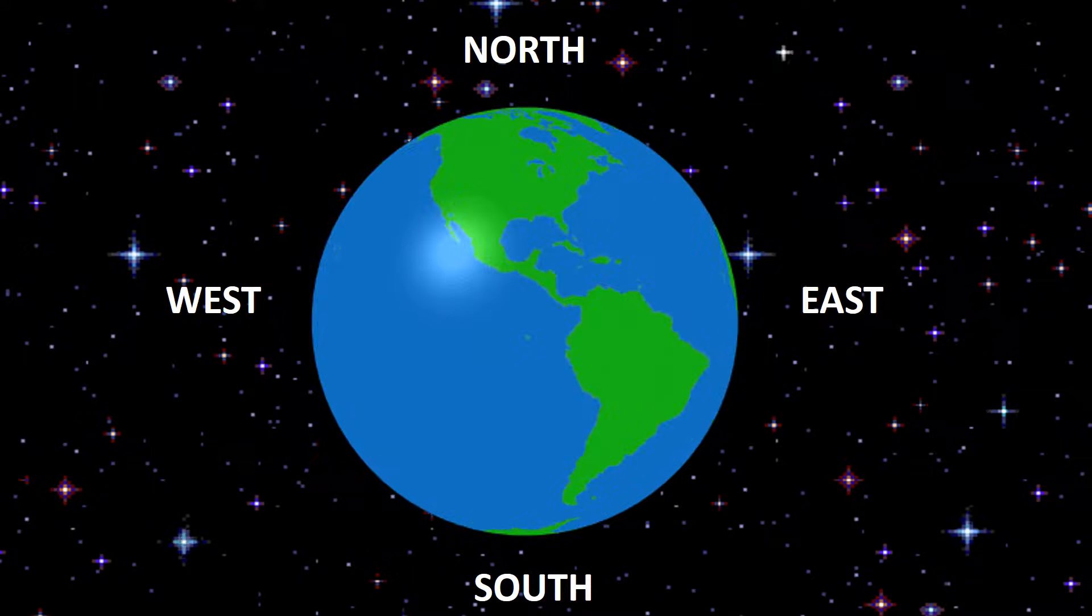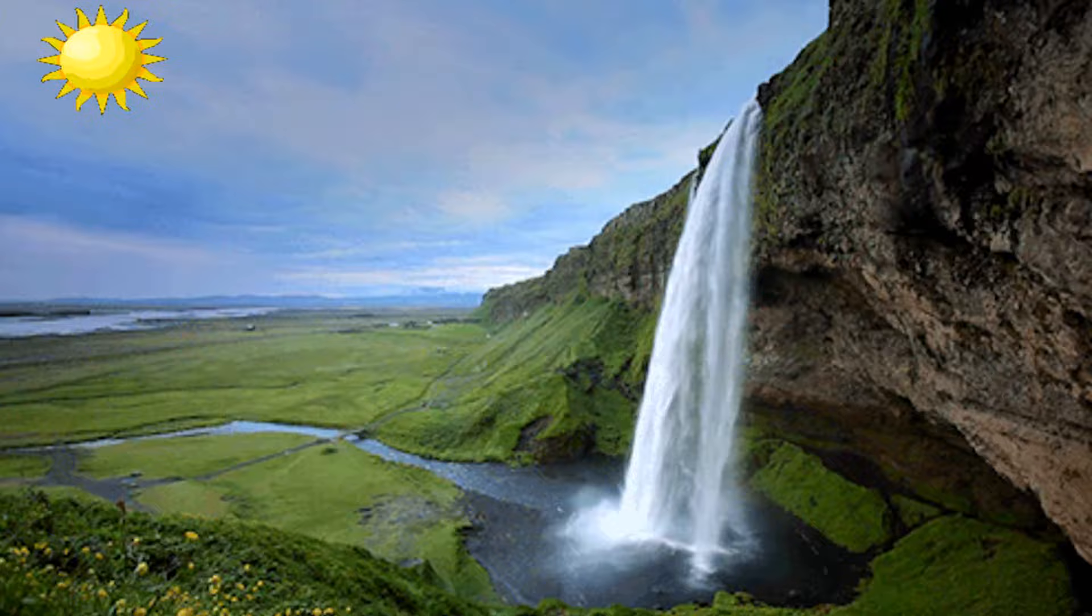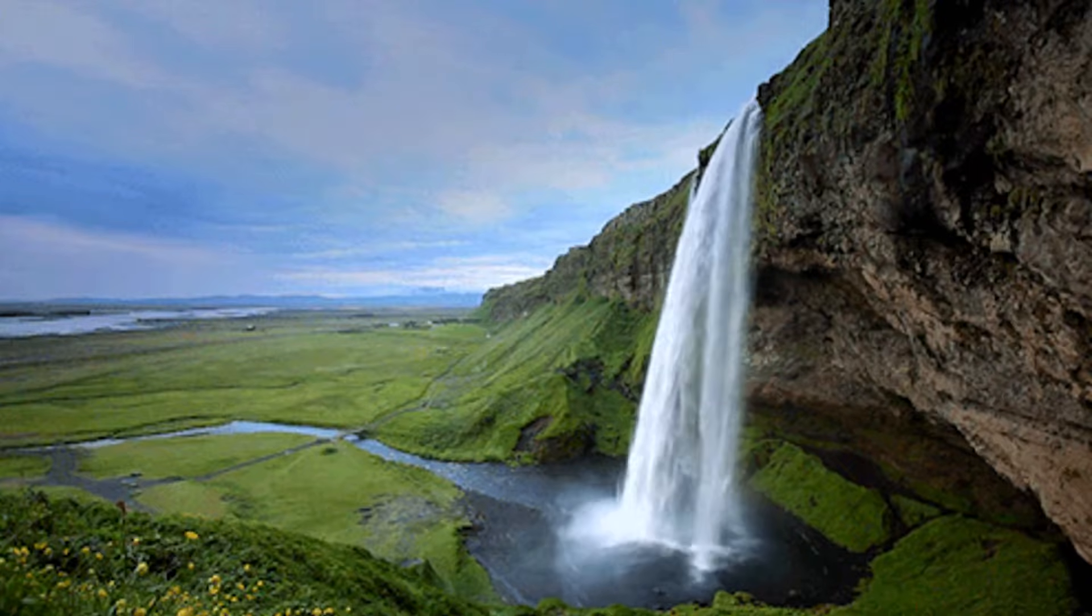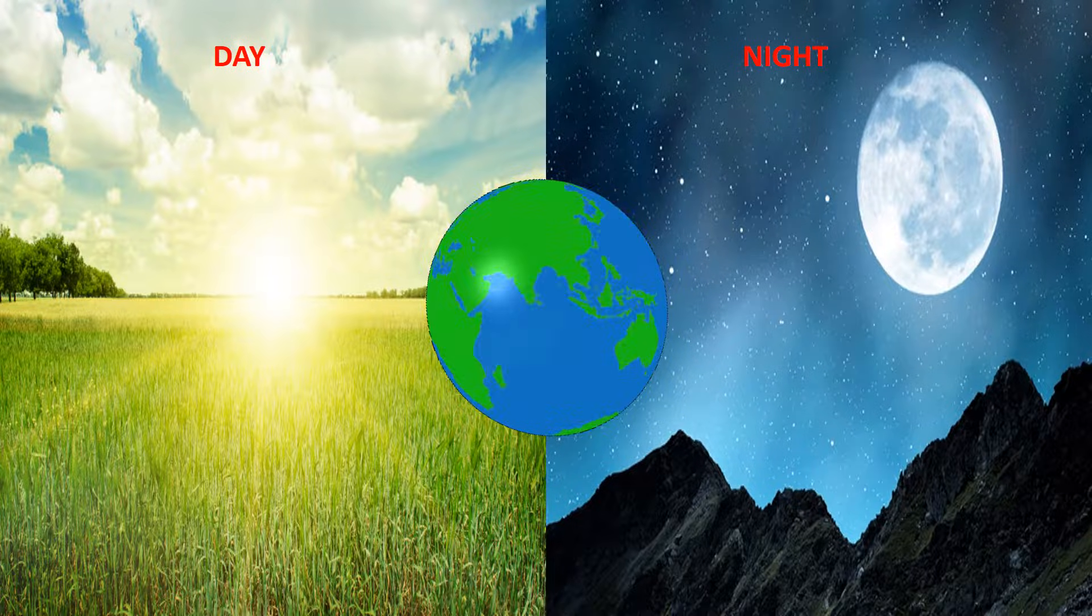Earth's rotation occurs from west to east. That is why the sun always appears to rise in the east and set in the west. The change between day and night is caused by the rotation of the Earth on its axis.